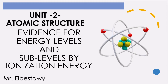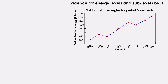Hello everyone. In this video I'm going to speak about the evidence for energy levels and sublevels by ionization energy. As we can see here in this graph, we have the first ionization energies for period 3 elements, starting from Na to Ar.